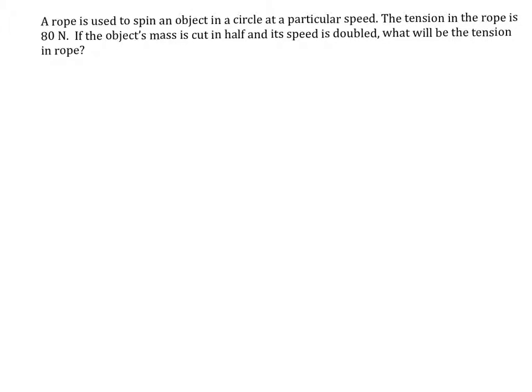All right, so in this situation we are spinning an object around with a rope in a circle. We're going to assume it's a horizontal circle, and we really know nothing about this object. We do not know its mass, we do not know its speed, we don't even know the length of the rope. All we know is that the tension in this rope is 80 newtons.